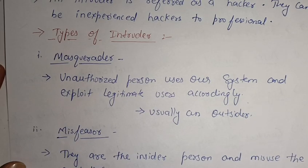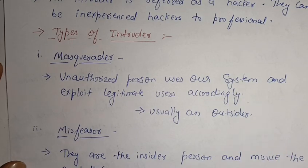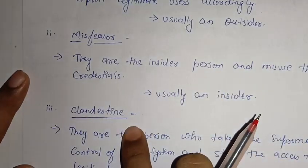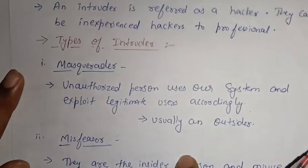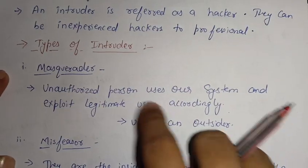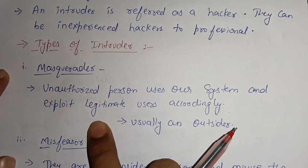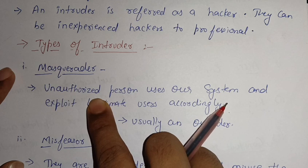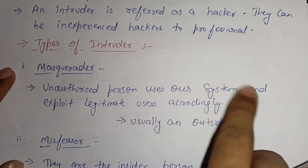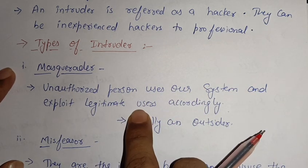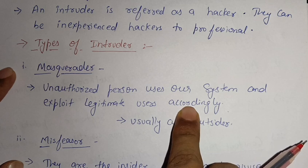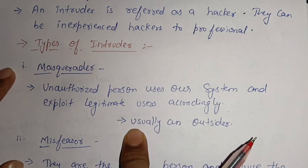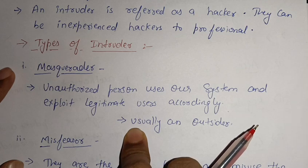There are three types of intruders: the first one is the Masquerader, the second is the Misfeasor, and the third is Clandestine. The Masquerader is an outsider — an unauthorized person who uses a system and exploits legitimate users. They are not from the organization; they are outside persons trying to steal data.